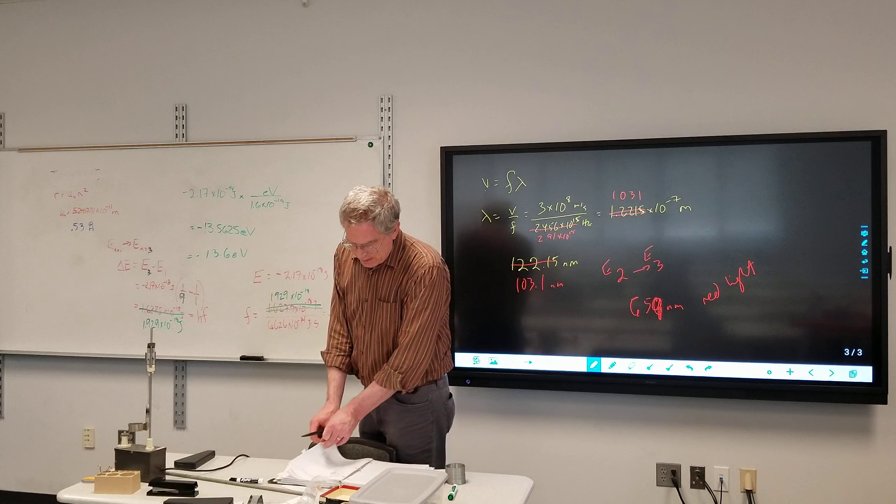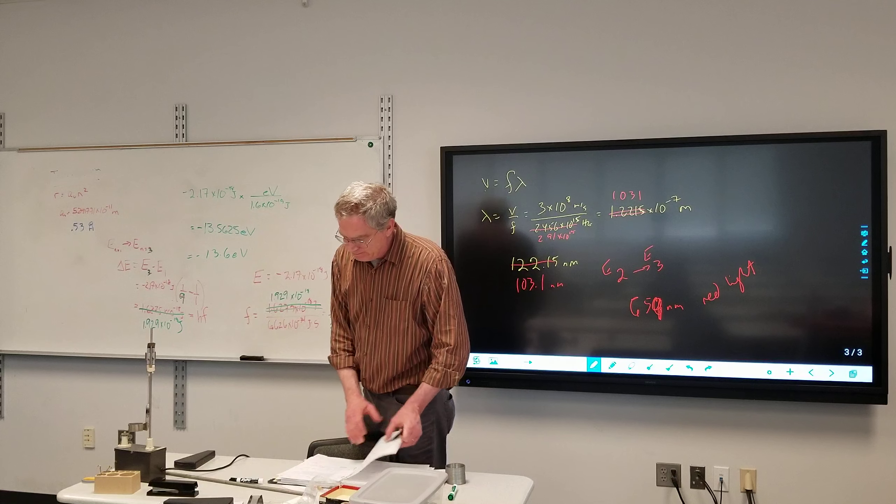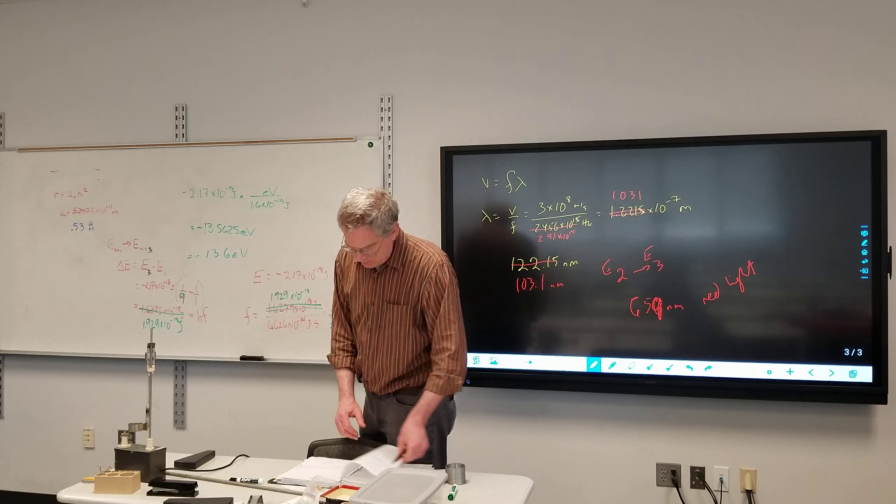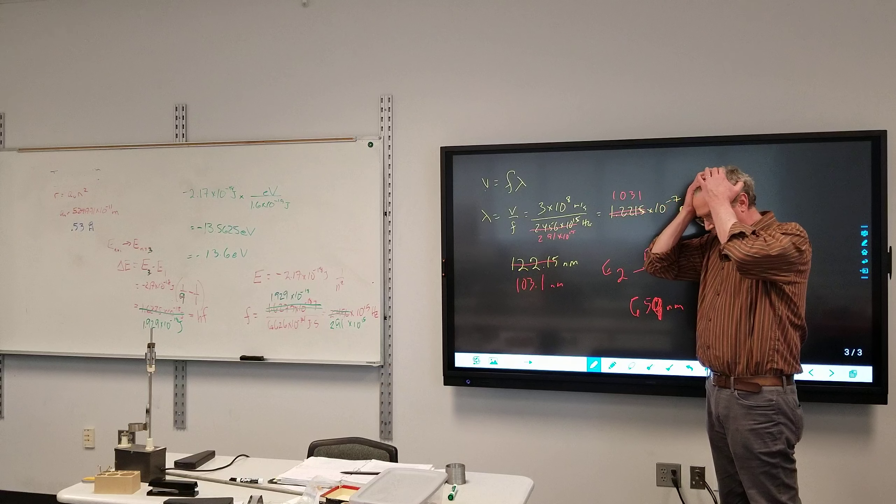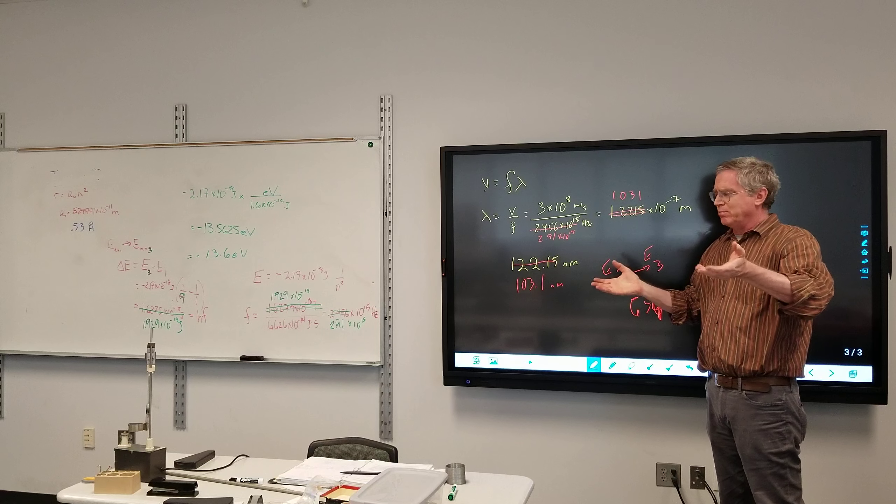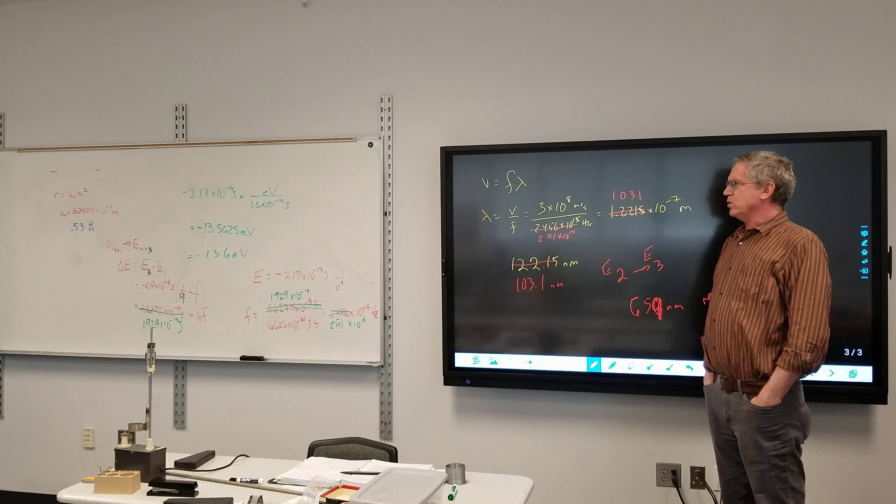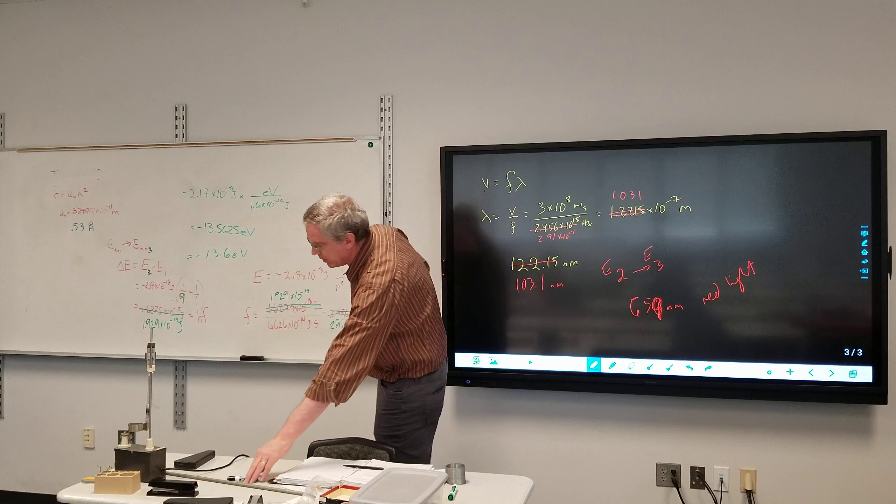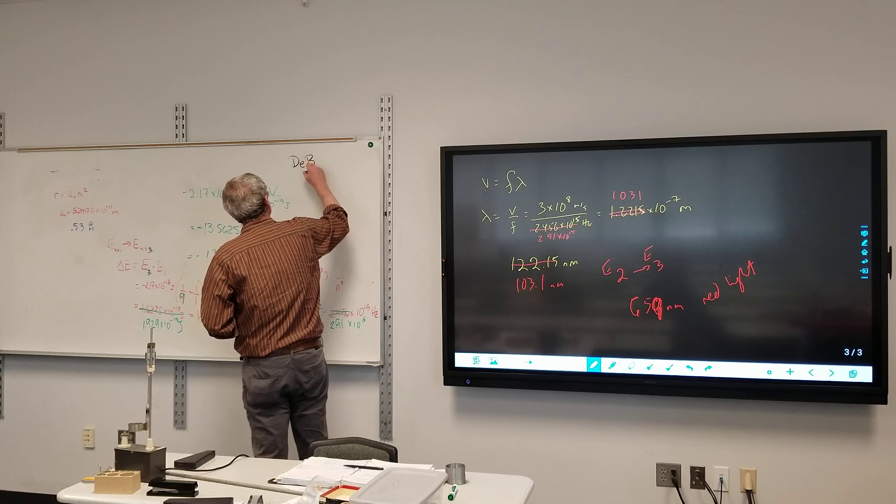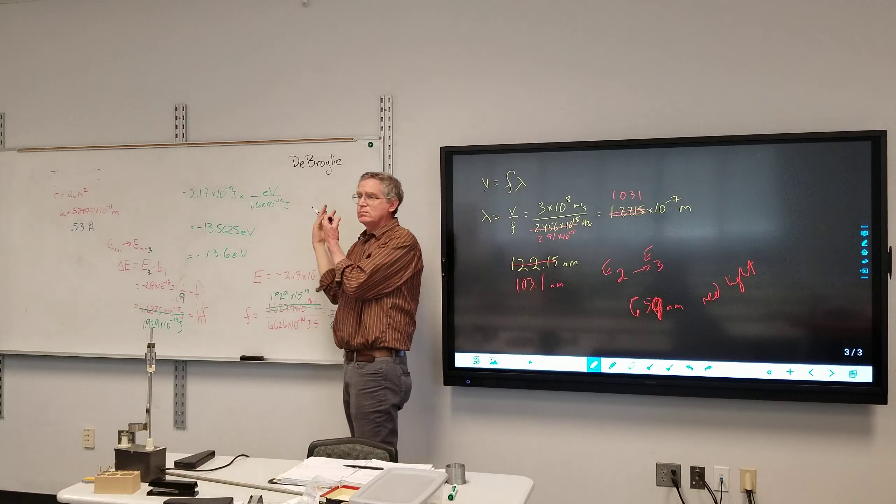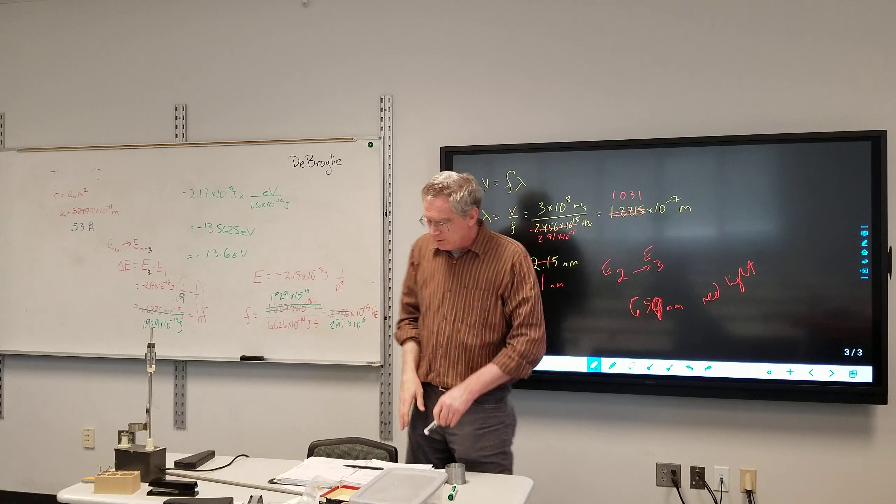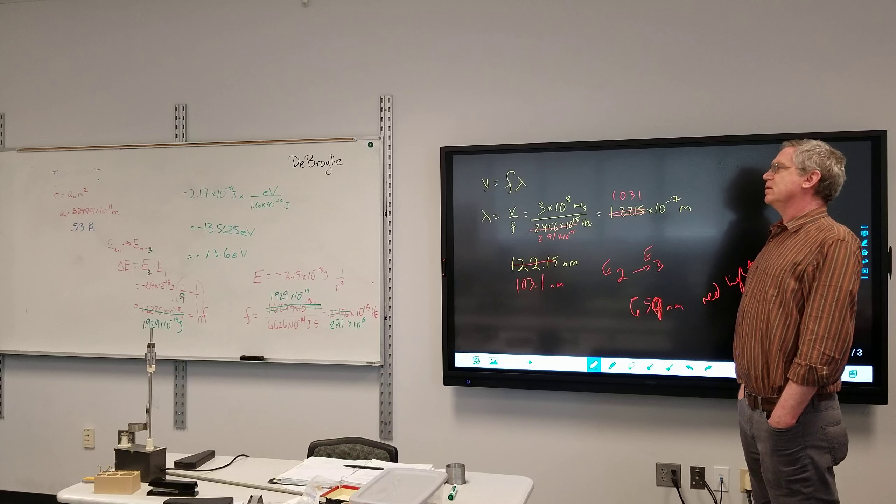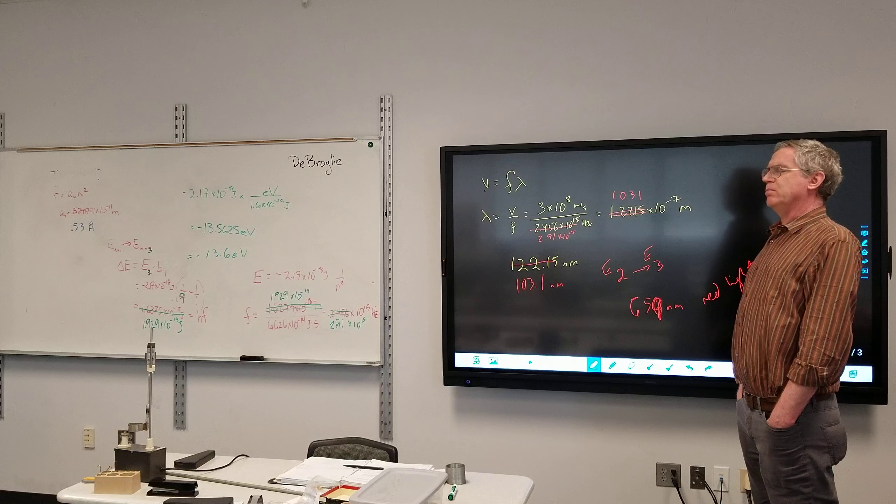So, we now have an explanation for spectral lines that could not be explained in classical physics. What we have so far is that light obviously behaves like a wave, but it also behaves like a particle. So, enter Prince Louis de Broglie, and excuse my pronunciation. Who speculates that if light can be a particle or a wave, can an electron be a particle or a wave?